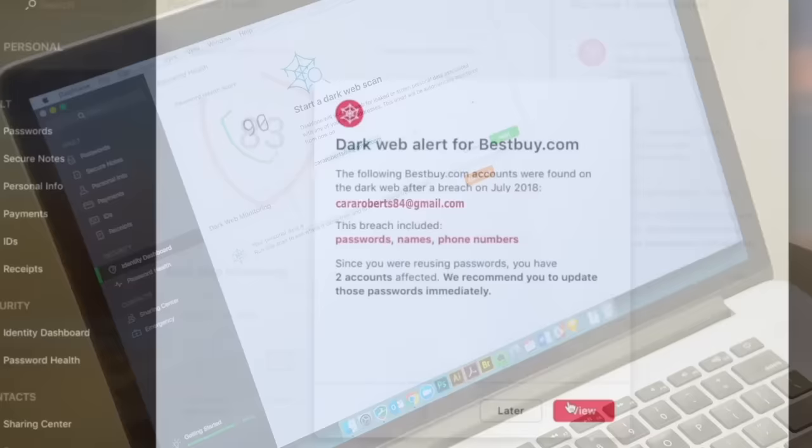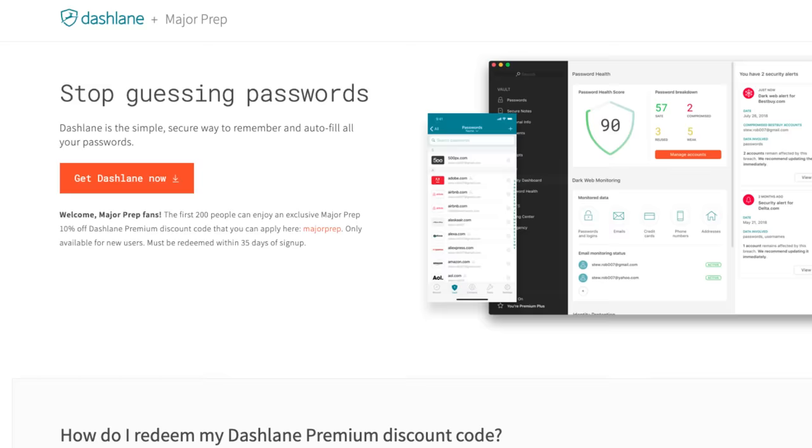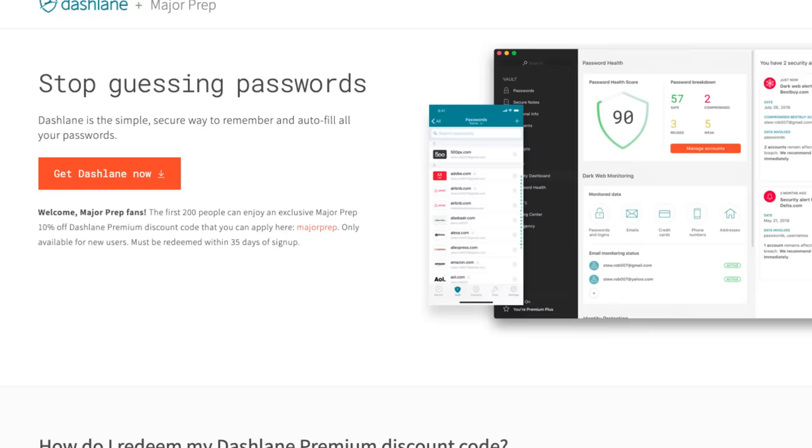Pricing is already really cheap, but if you sign up at the link below, or go to dashlane.com slash major prep, you'll get 10% off your premium subscription. Plus, there's a 30-day free trial, so no risk in just giving it a try. Again, links are below, and with that, I'm going to end that video there.